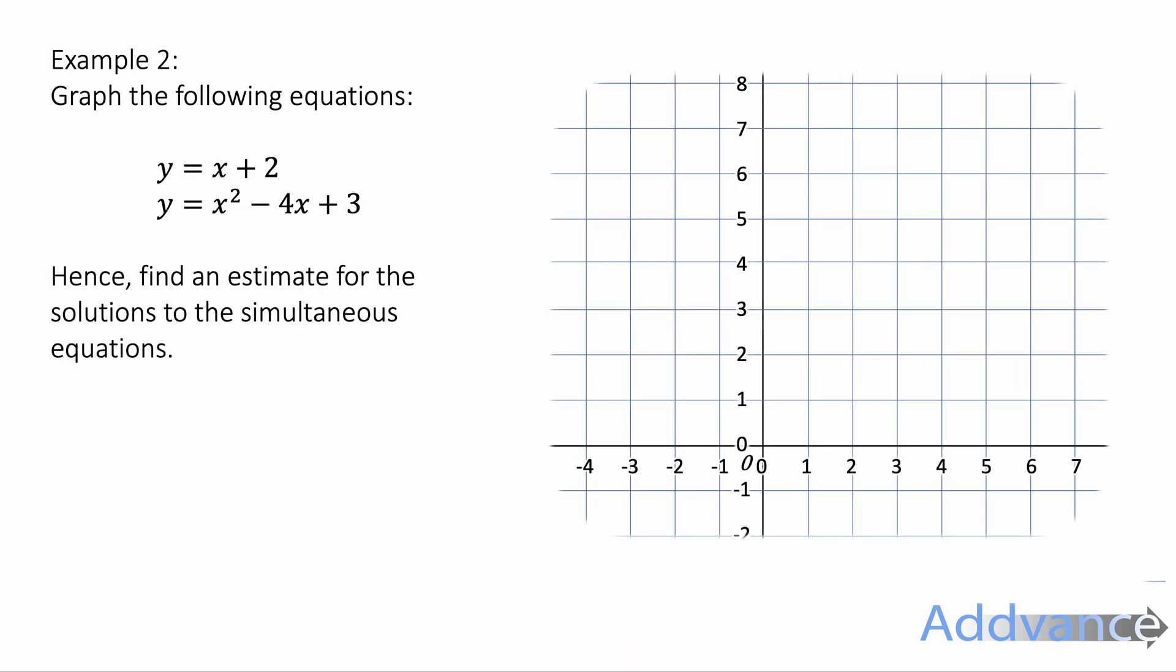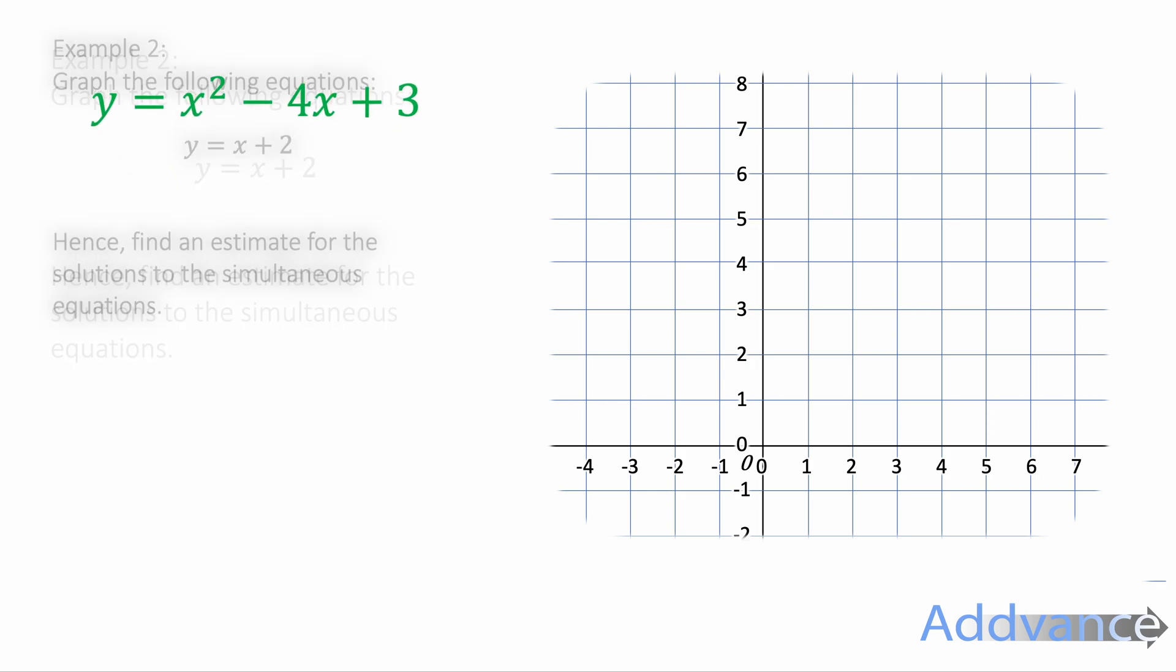Now the next one is graph the following equations: y equals x plus 2 and y equals x squared minus 4x plus 3. Hence find an estimate for the solutions to the simultaneous equations. So we're going to start with y equals x squared minus 4x plus 3, and to graph that we need to do a table of values.